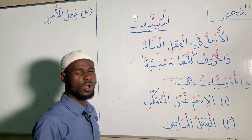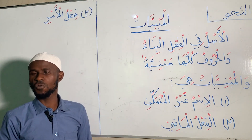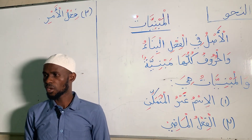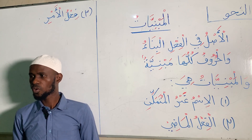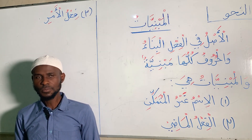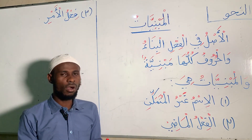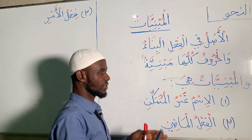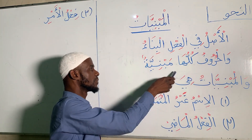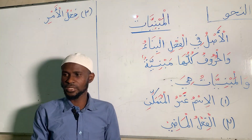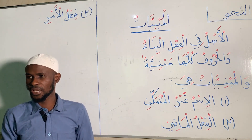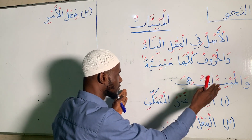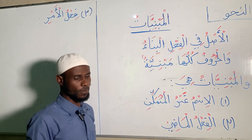There is a principle that says: Al-Huroof Kullu Ha Mabniyat. Let's say it together: Al-Huroof Kullu Ha Mabniyat. All prepositions in Arabic language — Kullu Ha, all of them — are Mabniyat. They maintain stagnancy.